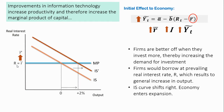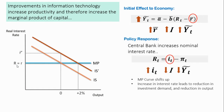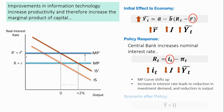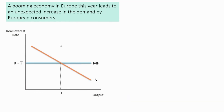Since the economy is now above potential, the central bank will try to stabilize it by increasing the interest rate. The MP curve shifts up to the new MPK level, and this higher interest rate leads to a reduction in investment, thereby reducing output. The change will then move along the IS curve and the economy will be back to potential.